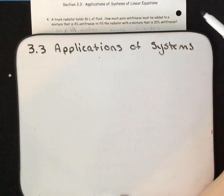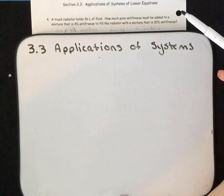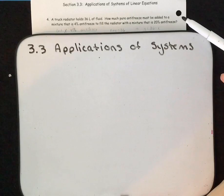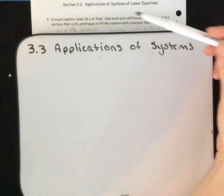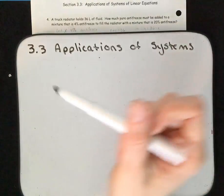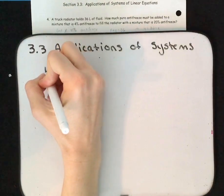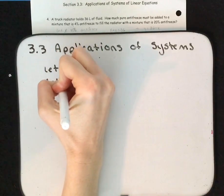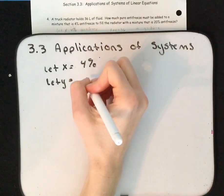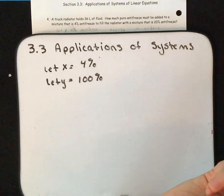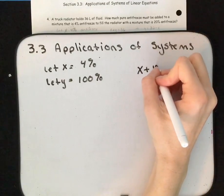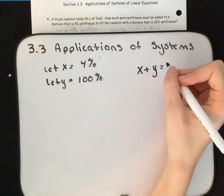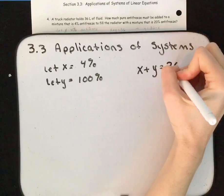A truck radiator holds 36 liters of fluid. How much pure antifreeze — that means 100% antifreeze — must be added to a mixture that is 4% antifreeze to fill the radiator with a mixture that is 20% antifreeze? The two pieces we're controlling are the 4% antifreeze and the 100% pure antifreeze. Those are our two variables: let X equal the 4% mixture and let Y equal the pure antifreeze. We know that X plus Y equals 36 liters.